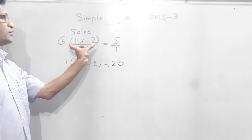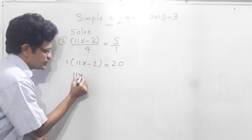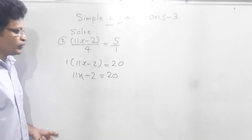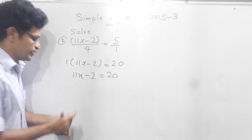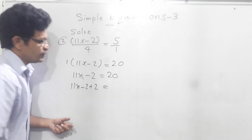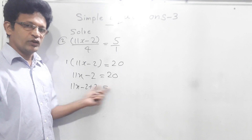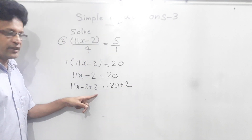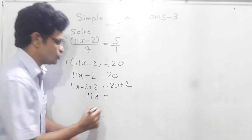1 into (11x minus 2), entire set we have to multiply. Now 1 times 11x is 11x, 1 into minus 2 is minus 2, equals 20. Now we have to get rid of this minus 2. To get rid of this minus 2, we have to add plus 2 on this side. Then 11x minus 2 plus 2; the other side also we have to add 2 to keep the balance, so 20 plus 2. Now minus 2 and plus 2 will get cancelled. This side we get 11x, and this side 20 plus 2 is 22.